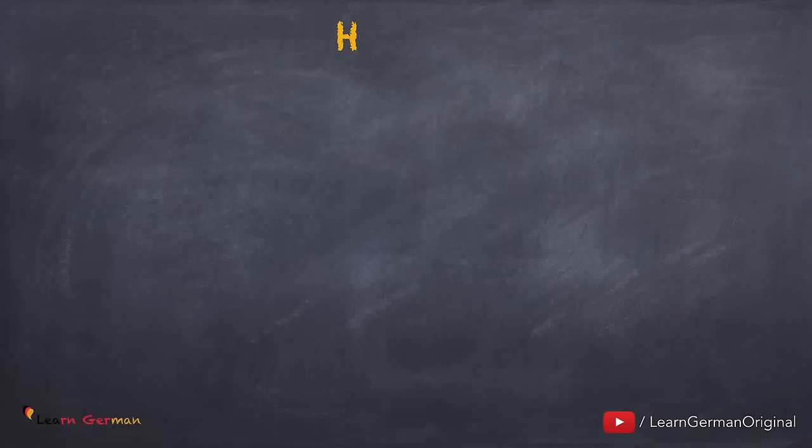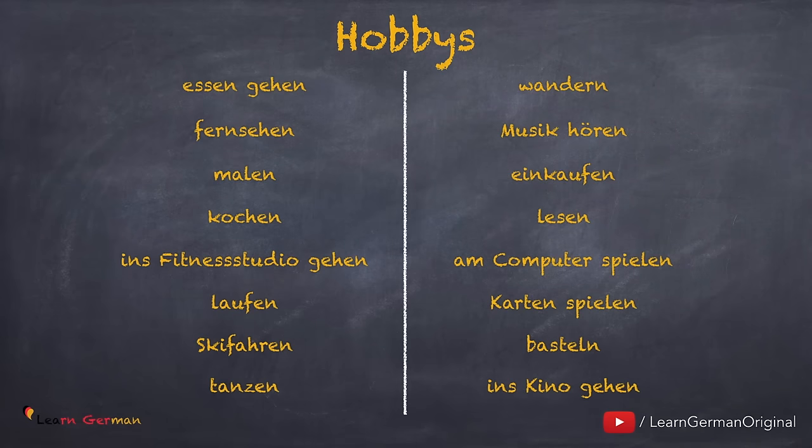Hier ist eine Liste von Hobbys. Du kannst dein Hobby auswählen und über deine Hobbys sprechen. Zum Beispiel: ich gehe gern essen, oder ich koche gern. Du kannst unser Video über Hobbys sehen, um die Aussprache zu lernen.